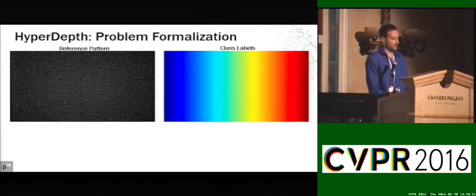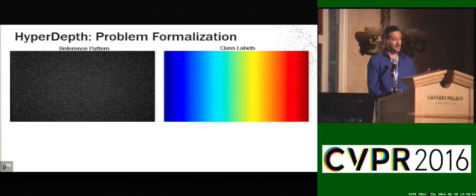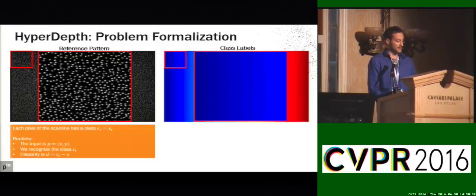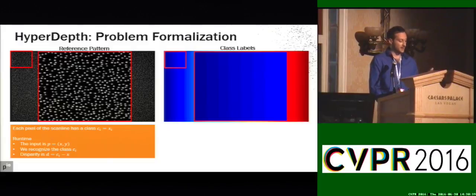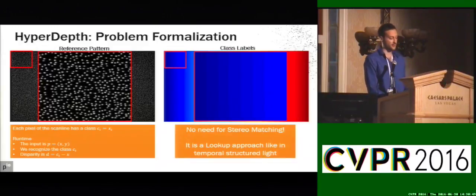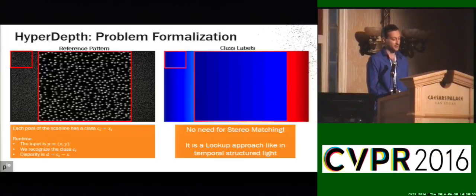How do we formalize this? Given the reference pattern, we assign a class label for each pixel — shown here color-coded. We assign classes by setting the class equal to the current X coordinate. This simplifies the problem: once we recognize class C for a pixel, the disparity is simply the current class minus the current X. There is no need for stereo matching — it's just a lookup approach, as in temporal structured light.